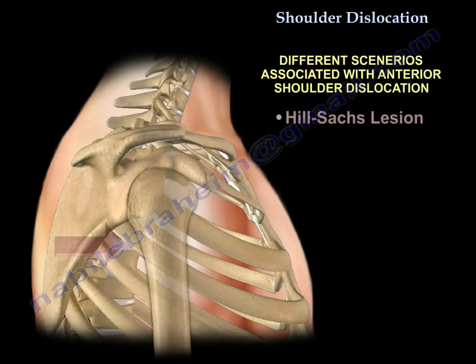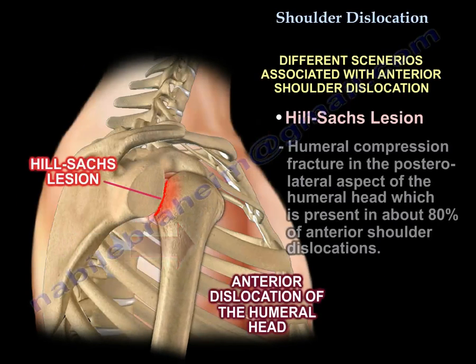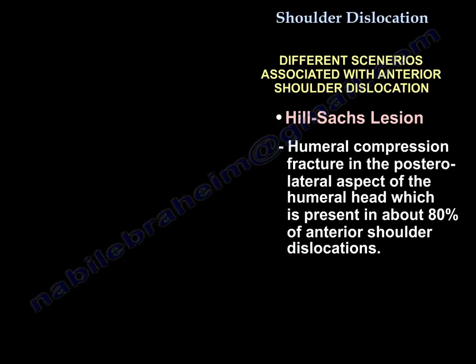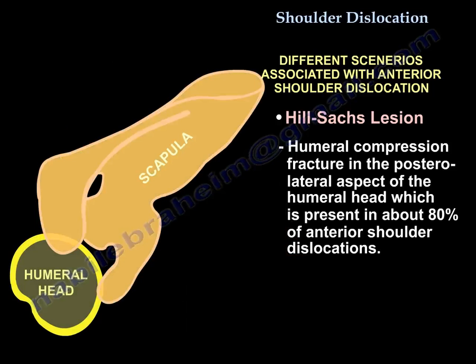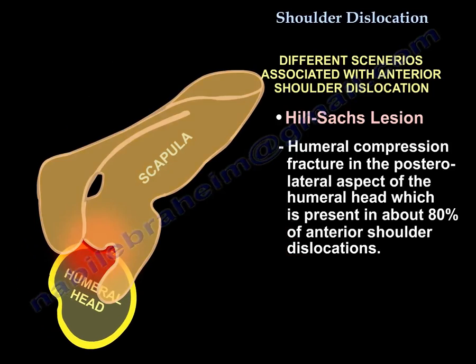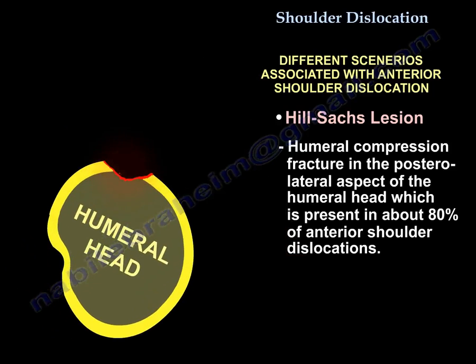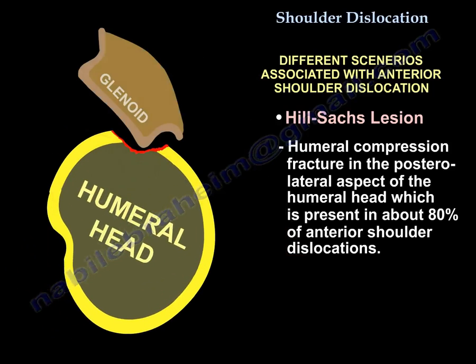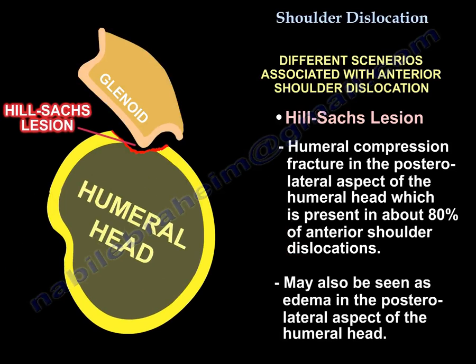How about the Hill-Sachs lesion? This is a humeral head fracture — specifically a compression fracture in the posterolateral aspect of the humeral head, which is present in about 80% of anterior shoulder dislocations. This can also be seen as edema in the posterolateral aspect of the humeral head.